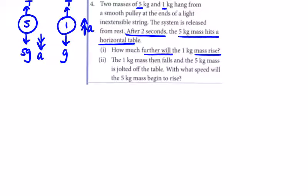So our equations become: 5g - T = 5a, and T - g = a.